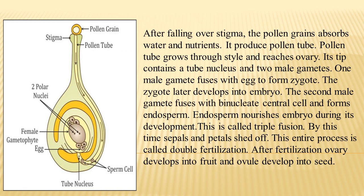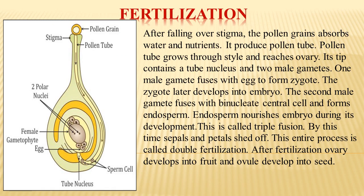The very important process that happens after pollination is fertilization. Fertilization is the fusion of male and female gametes. After pollination, the pollen grains fall on the stigma and start absorbing water and nutrients, producing a pollen tube. The pollen tube germinates and passes to the ovary through the style. The tip contains a tube nucleus and two male gametes. One male gamete fuses with the egg to form the zygote, and simultaneously the second male gamete fuses with the two polar nuclei, forming the endosperm.